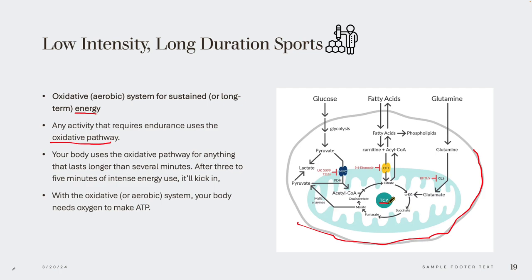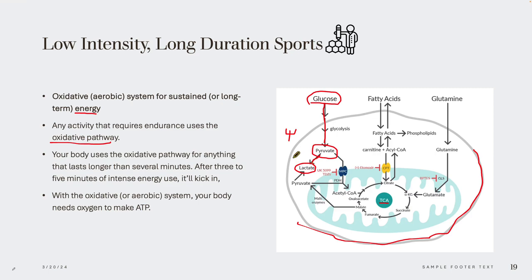If exercise intensity is low and longer in duration, glucose will enter the cell and get converted into pyruvate. This is the metabolic fork in the road — pyruvate has to make a decision. If we have high intensity, pyruvate will go to lactate, and lactate and hydrogen will cause burning in the legs, forcing us to rest. This anaerobic pathway produces very little energy.